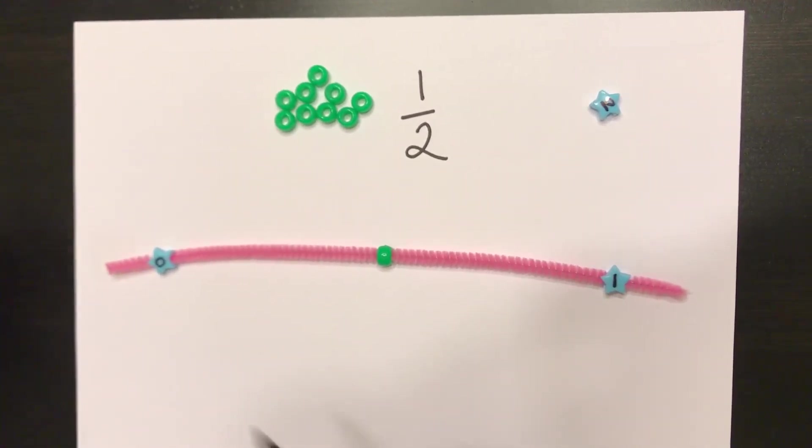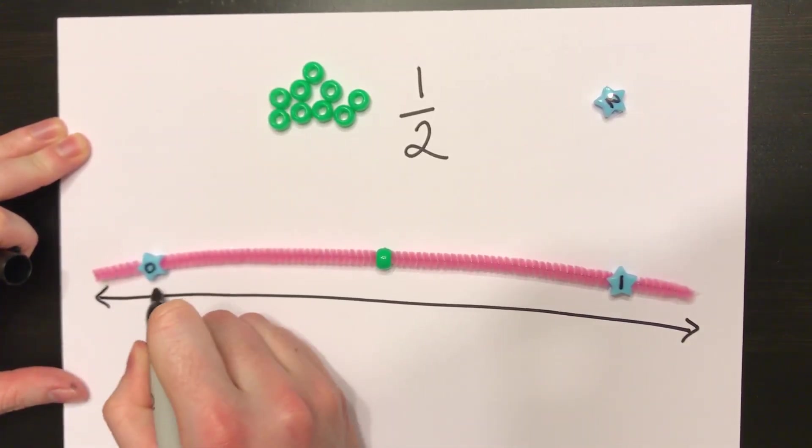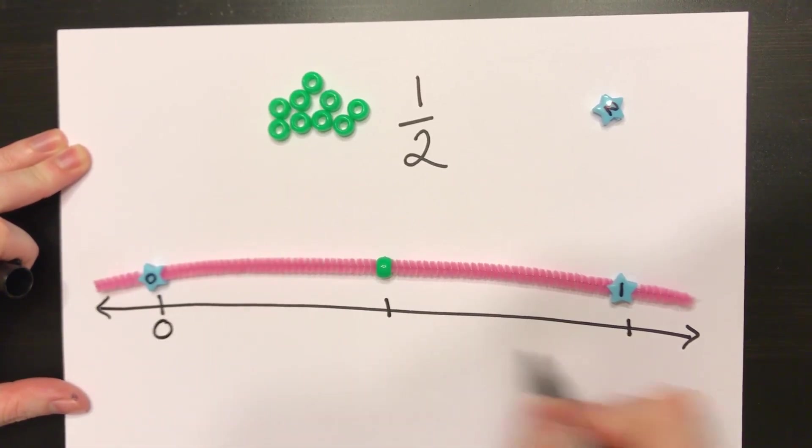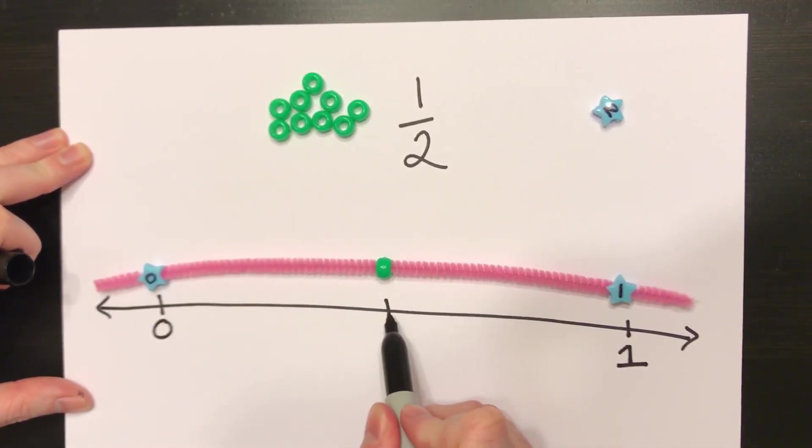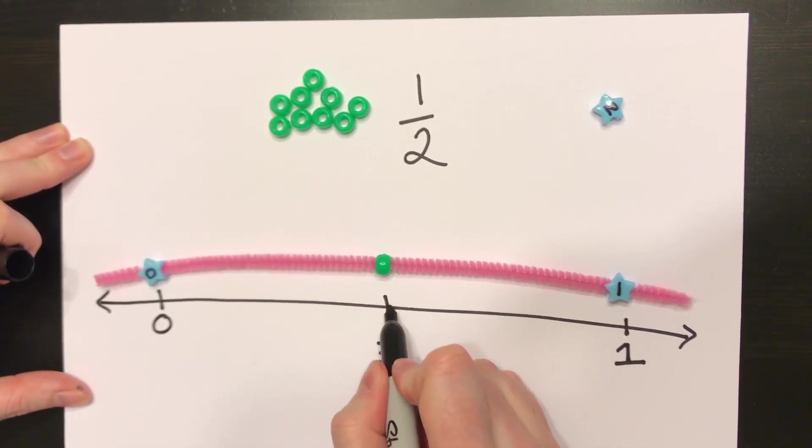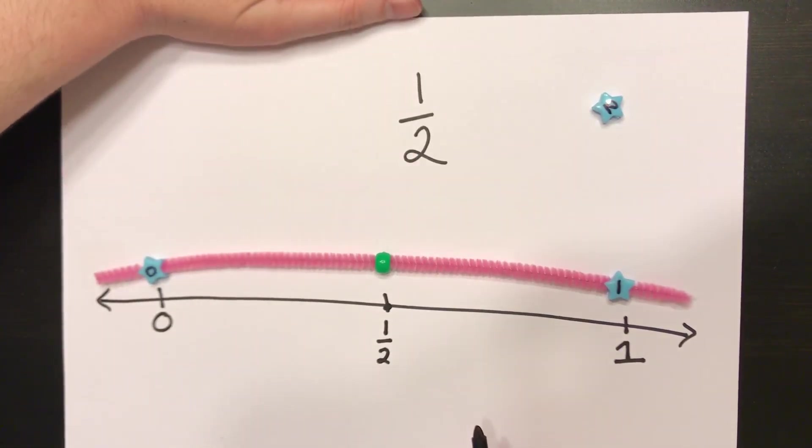And now I can trace my number line, and I can put a tick mark at each bead, labeling each bead 0, my wholes first, and 1, and if that's the first out of two parts, I would label it as 1 half. And I can easily put a little dot there if I have to find it on the number line. You've now found 1 half on the number line.